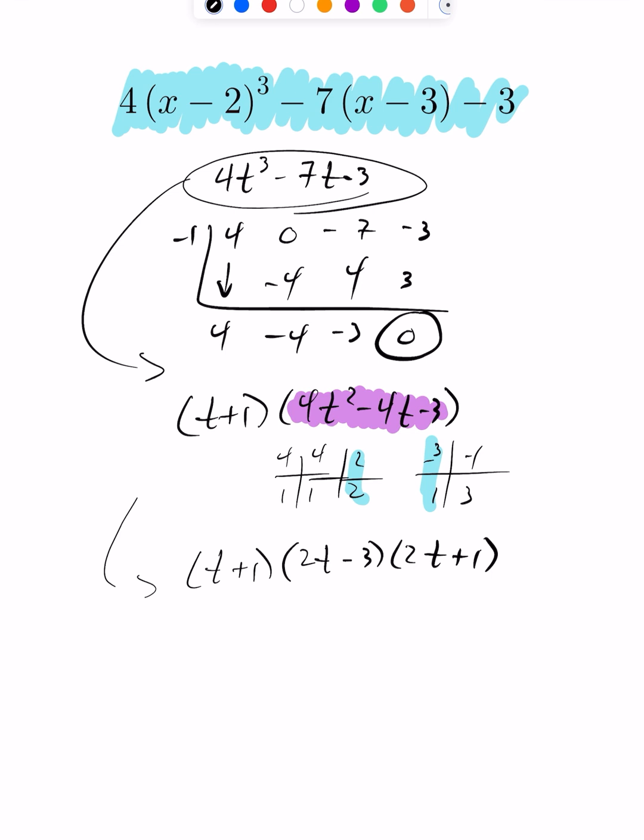But it's not t, it's actually x-2. So this will be (x-2+1), 2(x-2)-3, and 2(x-2)+1. We should expand this out.